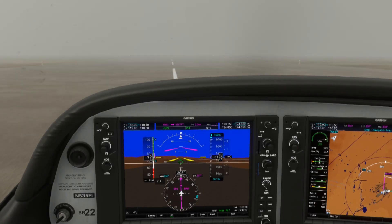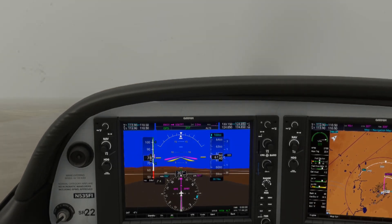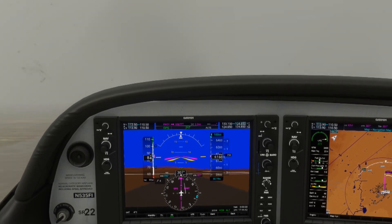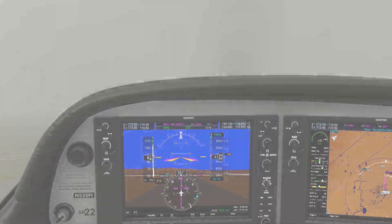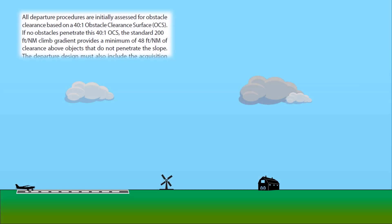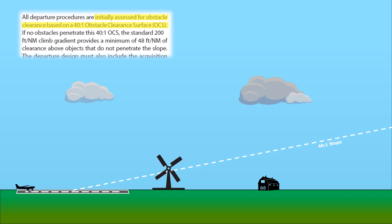When aircraft depart IFR, how do we know they'll be safe to climb out in the clouds without hitting terrain or obstructions? A careful study is made of airport terminal areas. As stated in the Instrument Procedures Handbook, if no obstacles penetrate an imaginary line with a 40-to-1 gradient, then a standard departure can be used — 200 feet per nautical mile — with the first turn commencing at 400 feet above the departure end of the runway. If an obstacle does penetrate that line, an obstacle departure procedure might be necessary.